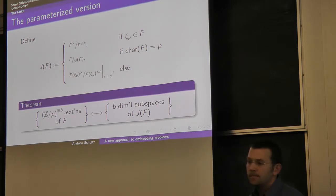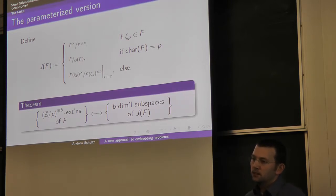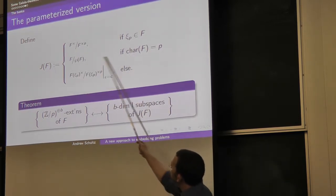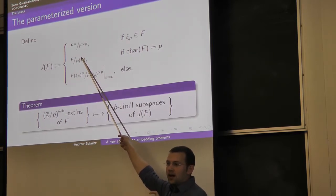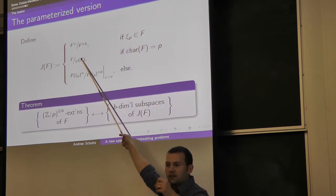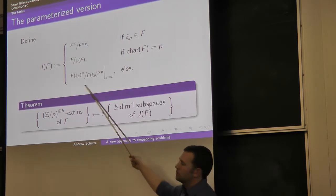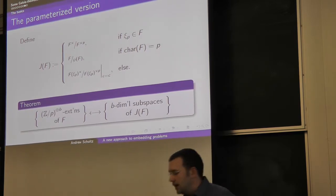J(F) is a vector space over Fₚ. If your original field F has characteristic 0 and has its roots of unity, it's F mod P-powers, and the Fₚ action is just exponentiation — hitting it by the P-power sends it into what you're modding out by. Or it's this eigenmodule of something similar. Either way it's still a vector space over Fₚ because you have that P.